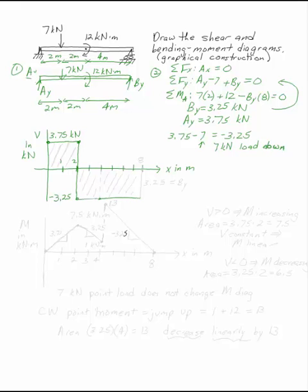nothing else happens until the end of the beam. At the end of the beam, you have the point load up from the roller. The point load up from the roller is 3.25. This is By. It's important to notice that that gets you back to zero. If your V diagram does not come back to zero at the end of your beam, your beam is not in equilibrium, or more to the point, you've done something wrong.